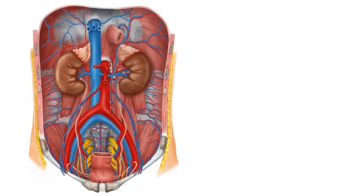Blood that returns to the heart via the veins comes from the capillaries. They are the point where the arteries and veins merge with one another and serve as a complex plexus of many tiny branches. This is also where the exchange of gases, nutrients, and waste products takes place, because the capillary walls are thin and fenestrated.